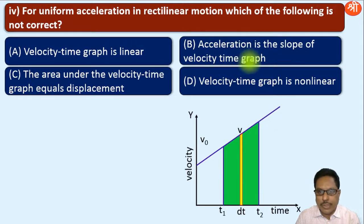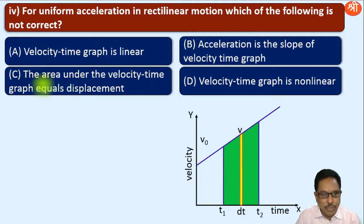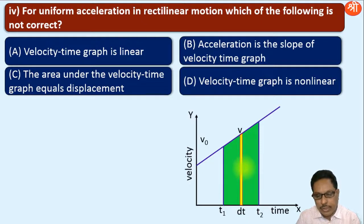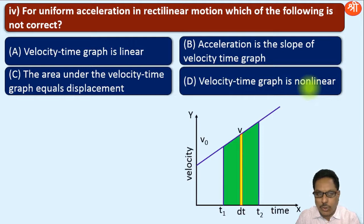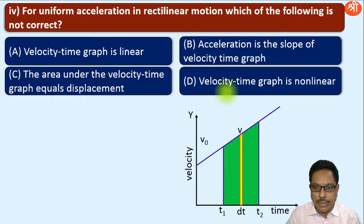Option B — acceleration is the slope of the velocity-time graph — is also correct, as we have seen in a previous video. Option C — the area under the velocity-time curve equals displacement — is also correct; the shaded area bounded by the curve and the x-axis gives the displacement. But option D — velocity-time graph is non-linear — is not correct. The graph is clearly linear, not non-linear. We need to find the incorrect option, and that is D. So the answer to this question is D.